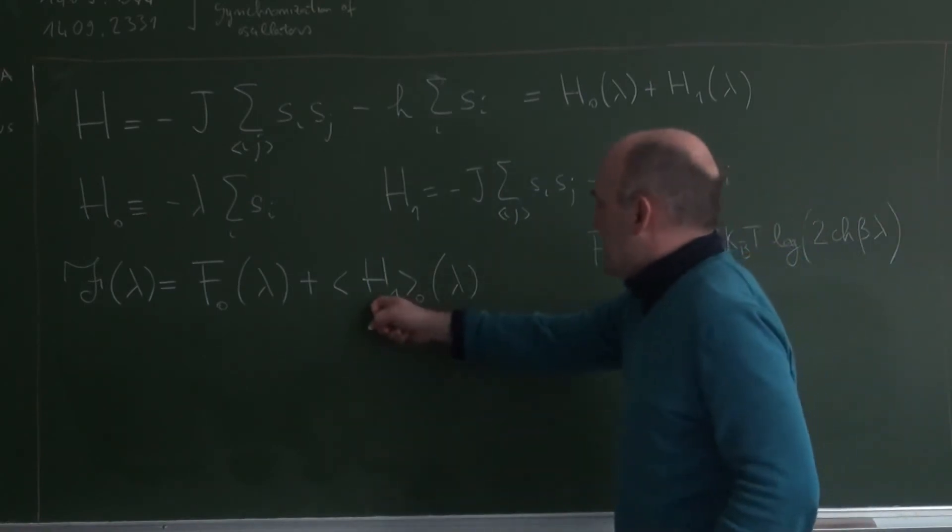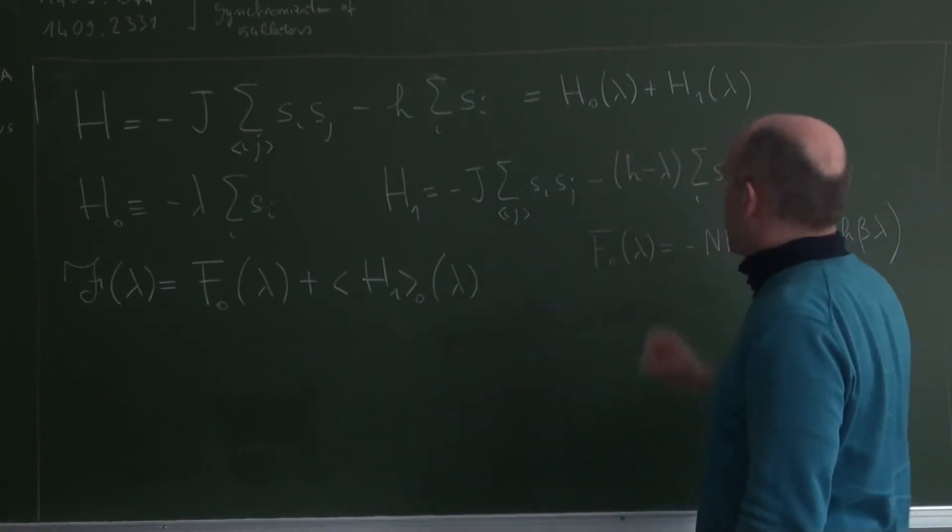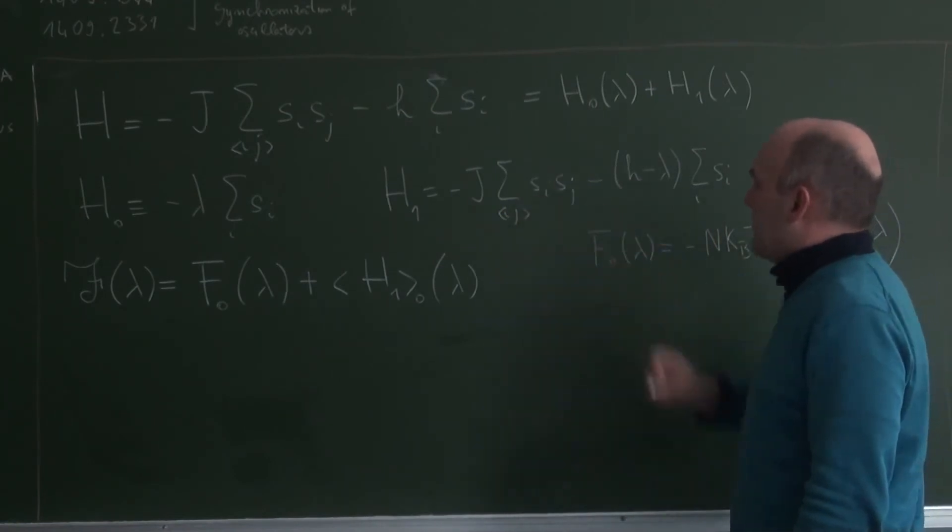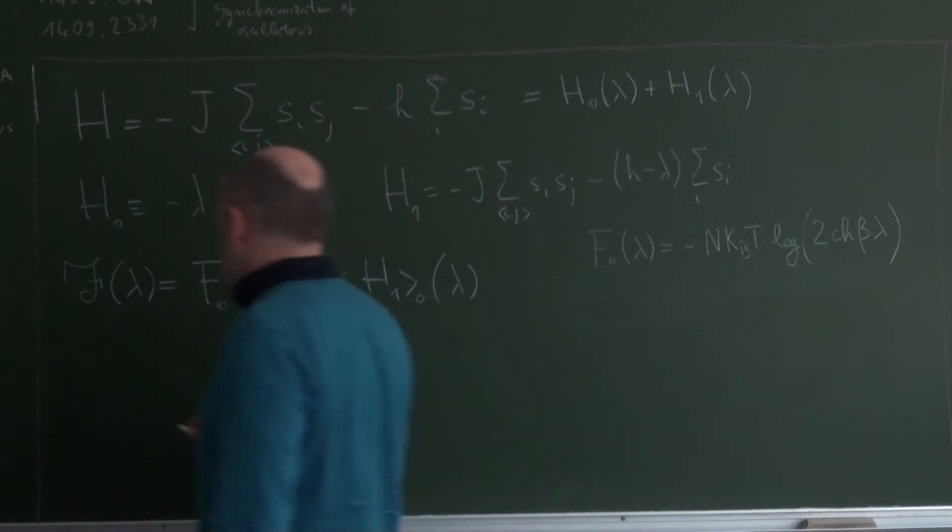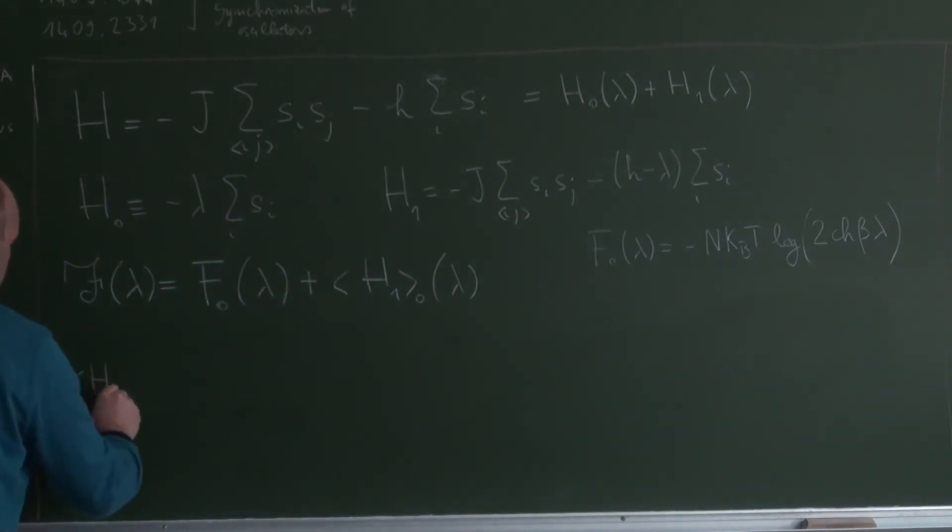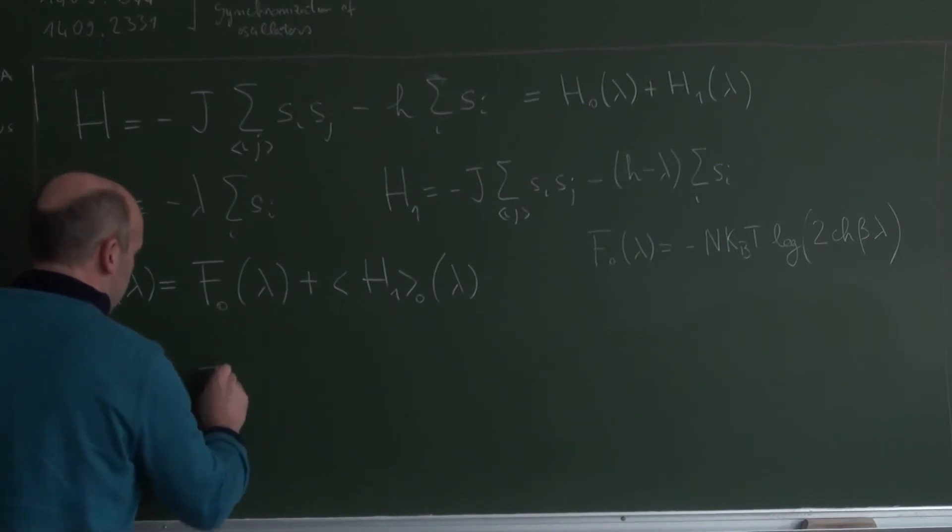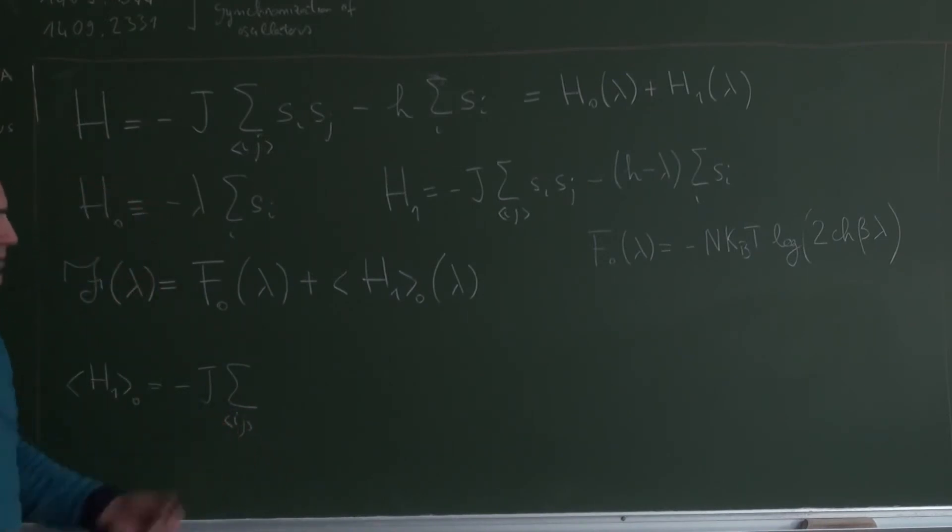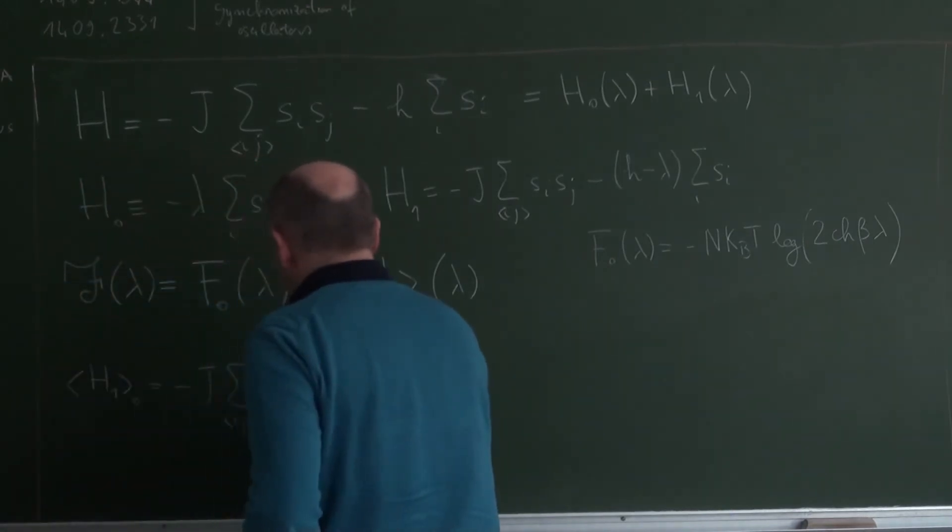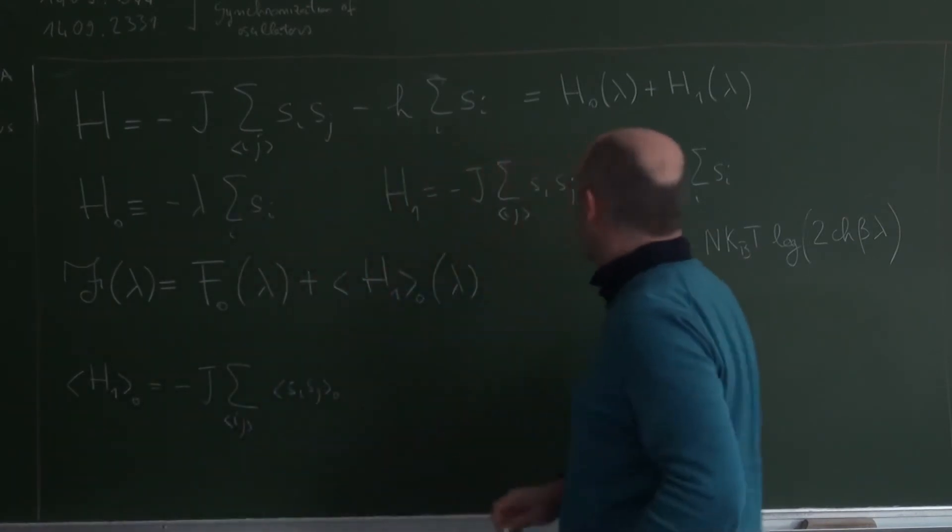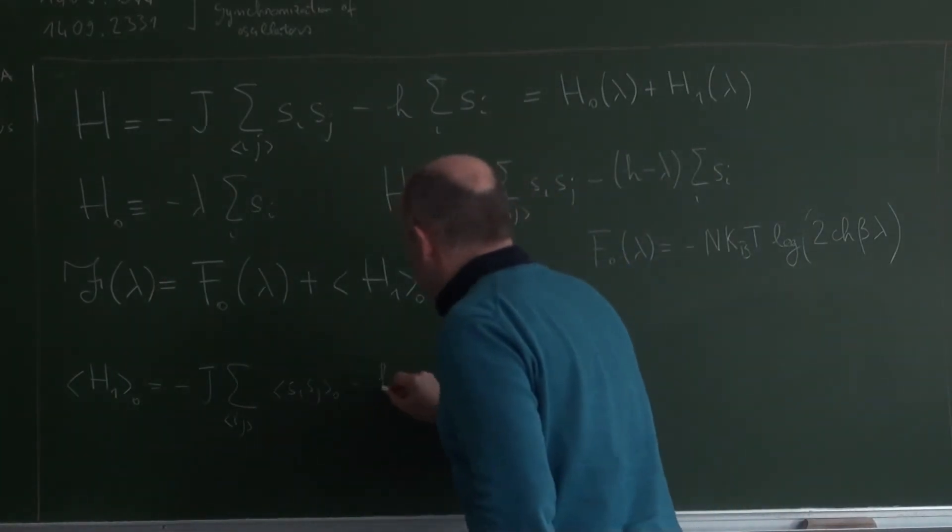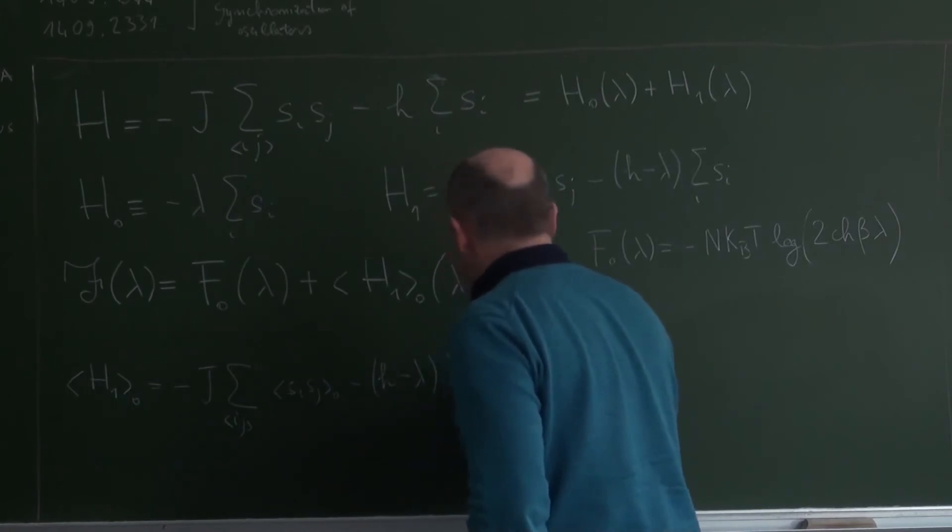Good. So we have to average this one. This one is this term. So it contains two averages. The average over Si Sj, so we write that the average of H1 with respect to the Hamiltonian zero is minus J, the sum over nearest neighbors. Now be careful, this means nearest neighbors, of the product, these are two different symbols. Minus h minus lambda, sum of i, and the average of Si.